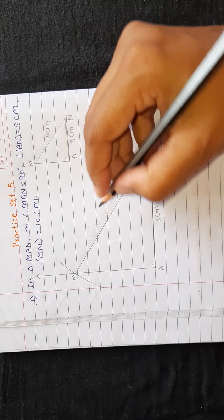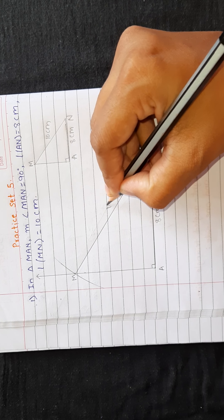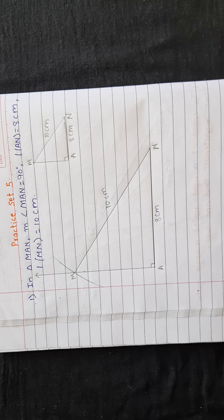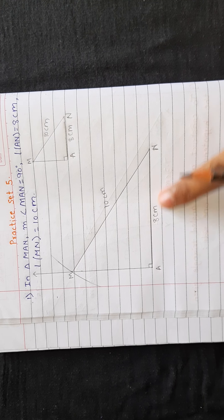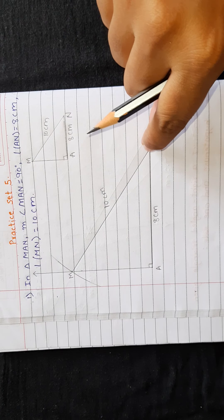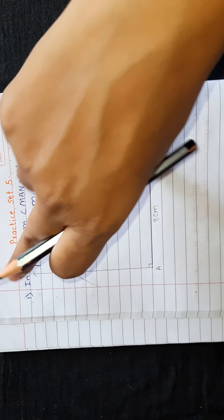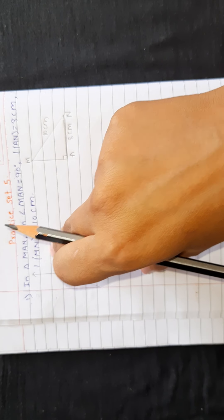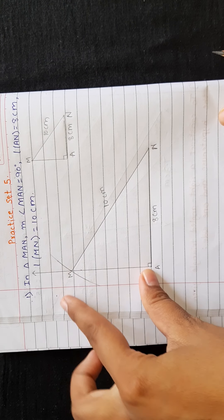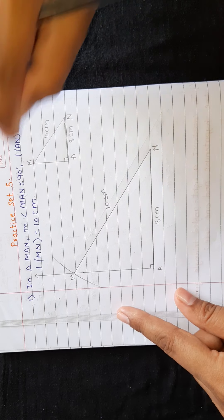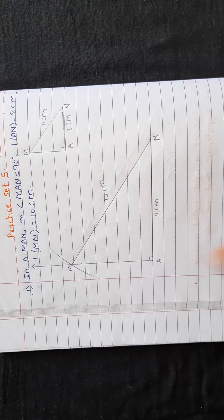Give the 90 degree symbol compulsory and write 10 cm for the hypotenuse. To summarize: first draw the base, then draw a ray at 90 degrees, and from the far base point mark the arc. Don't keep the compass at the wrong point — the arc must be drawn from N to M at a distance of 10 cm.